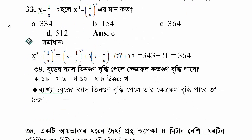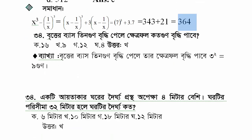This number: if x minus 1/x is equal to 7, find x³ minus 1/x³. We use the identity: a³ minus b³ equals (a minus b)³ plus 3(a minus b). Substituting x minus 1/x equals 7: we get 7³ plus 3 into 7, which gives us the answer. So the list equals cola — option is correct.